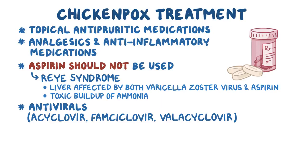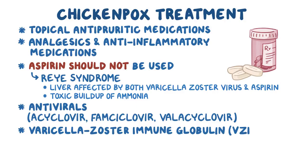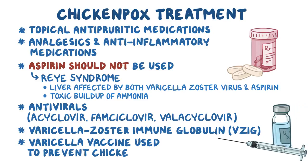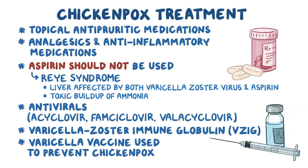In some situations, varicella zoster immunoglobulin, or VZIG — which are antivaricella antibodies — can be given to treat immunocompromised or pregnant individuals. Finally, the varicella vaccine can be used to prevent chicken pox by helping the body mount protective immunity against a weakened form of the virus. Similarly, the zoster vaccine can be used to reduce zoster, which is more common in adults.